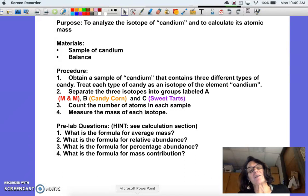What we're going to be doing in this lab is use three different types of candy to model how isotopes of an element function. Remember that isotopes are atoms of the same element that vary only in their number of neutrons, and since they have a different number of neutrons, they end up having different masses.